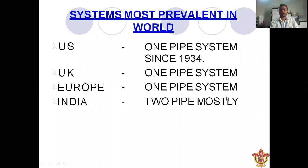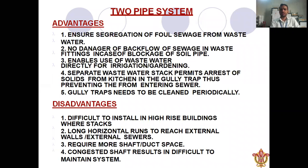The most prevalent system in the world: the US has used the one pipe system since 1934, and the UK and Europe also use the one pipe system. In India, the two pipe system is mostly used. Now let's discuss the advantages and disadvantages of the two pipe and one pipe systems and differentiate between them.